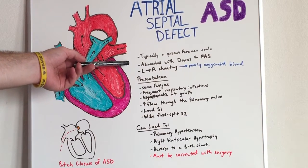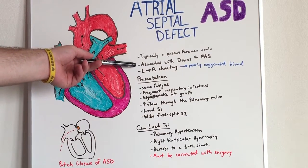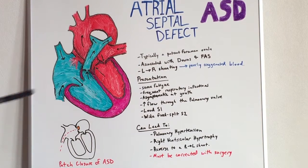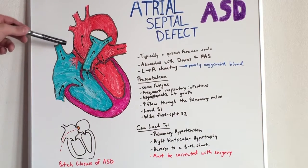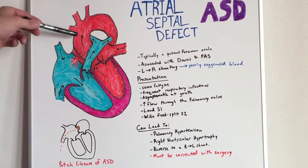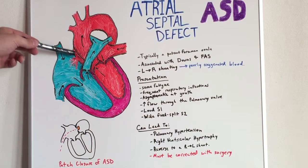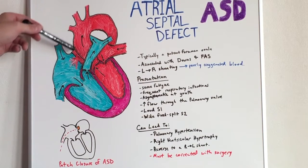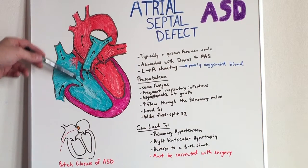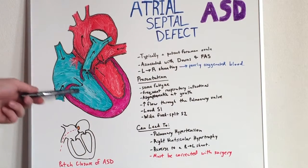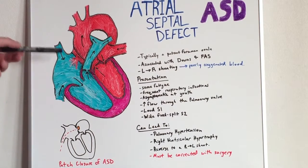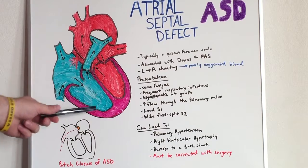ASD is normally associated with Down syndrome and fetal alcohol syndrome. The problem with left-to-right shunting in the atria is that richly oxygenated blood from the left atrium pours into the right atrium, meaning poorly oxygenated blood is flowing through the system and putting a lot more pressure on the right ventricle.